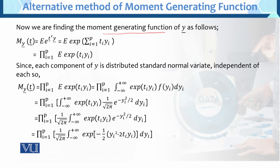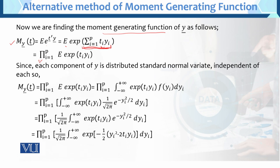Now we are finding the moment generating function of y. By definition, M of y(t) equals the expected value of exponential of t prime y. We write this expected value as a sum: i varies from 1 to p, t_i. We know that a sum of product terms — so we take the product lambda, where lambda equals the product for i from 1 to p of expected value of exponential of t_i y_i.